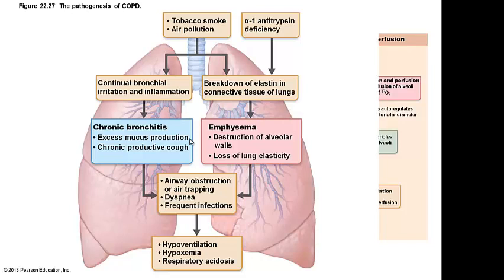Respiratory adjustments during exercise — when I start using up too much oxygen and generating too much carbon dioxide, I'll have an imbalance that affects breathing rate. They talk about hyperpnea — increased ventilation in response to metabolic needs. When my muscles are using up more oxygen and giving off more carbon dioxide, I'm going to increase breathing rate and the metabolism associated with gas exchange.